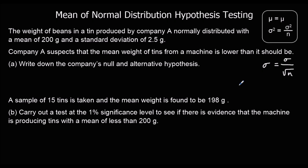Here we've got a question. The weight of beans in a tin produced by company A is normally distributed with a mean of 200 grams and a standard deviation of 2.5 grams. Company A suspects that the mean weight of tins from a machine is lower than it should be. Write down the null and alternative hypothesis. The null hypothesis is going to be that the mean weight is still 200 grams, so the mean equals 200.